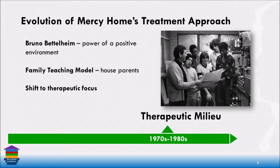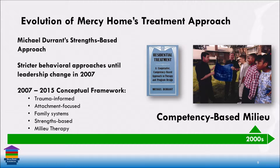We tried to shift to more of a therapeutic focus in the eighties and nineties, but they really struggled with managing safety and accountability while being therapeutic — and it's interesting because that's the same thing we sometimes struggle with today. In the nineties, Michael Duran wrote a book called the strengths-based or competency-based approach to therapy and program design in residential treatment. Leaders here got ahold of this book and it started to influence their thinking to look at kids as more than just a constellation of problems — what is going right that we can leverage to help them manage their challenges. Despite those efforts, stricter behavioral approaches really reigned until a significant shift in leadership in 2007.